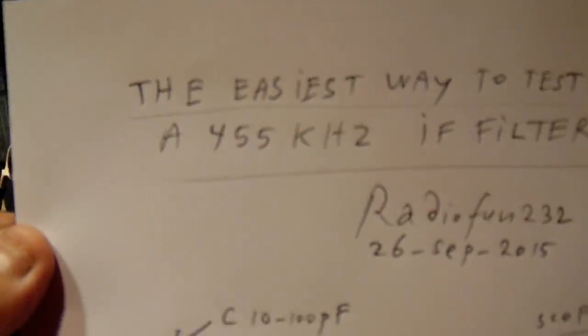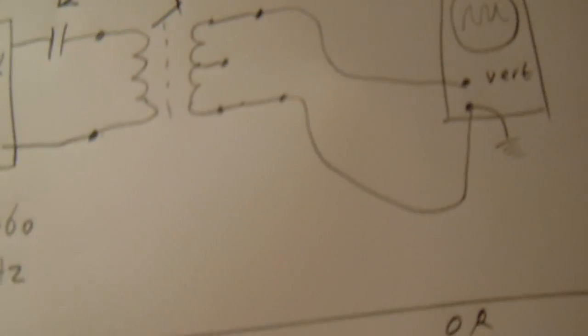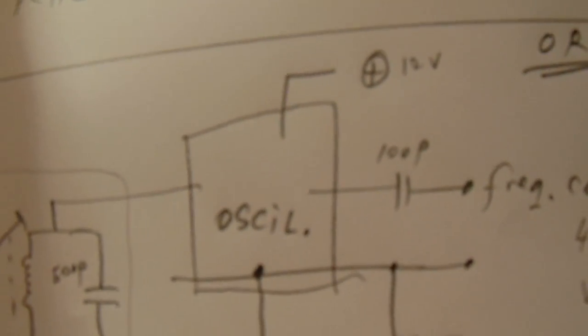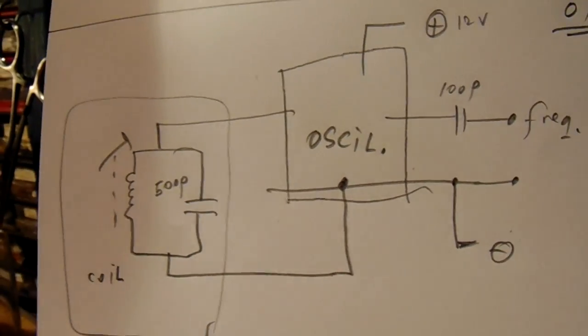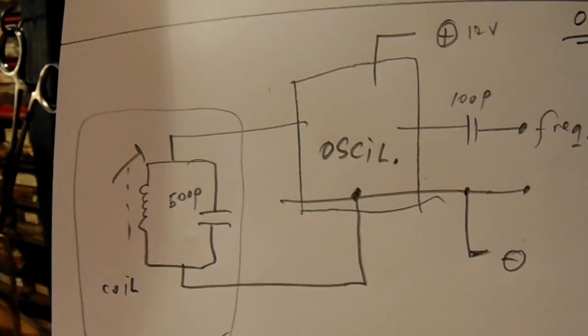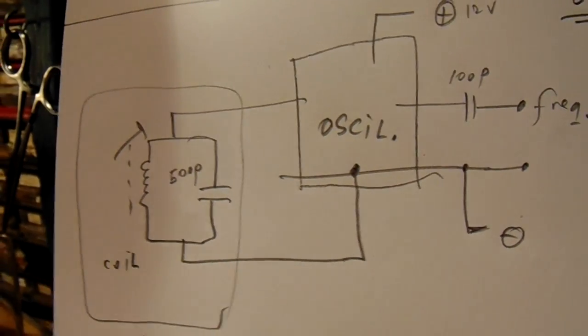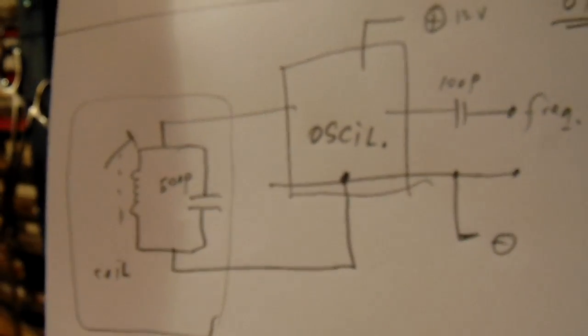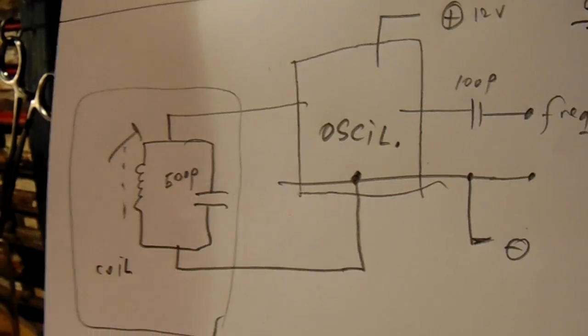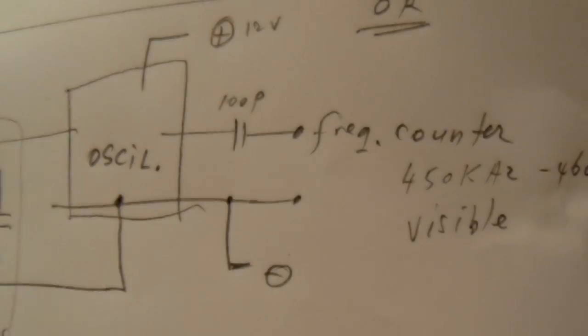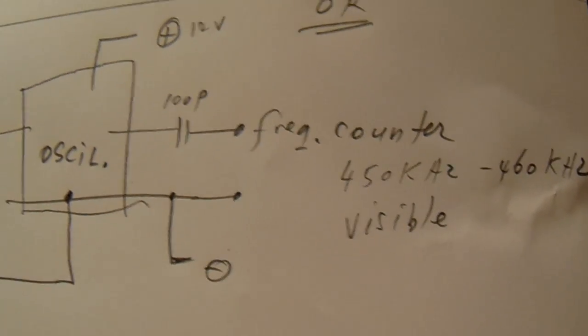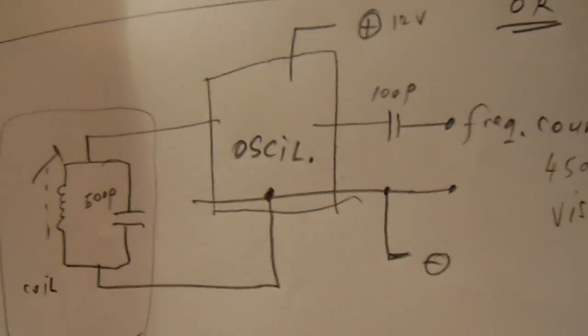Another way to test a 455 kHz IF coil is to connect it to an oscillator. There are many oscillator circuits on my YouTube channel from which you can derive a good idea and use them in a test circuit for IF coils.